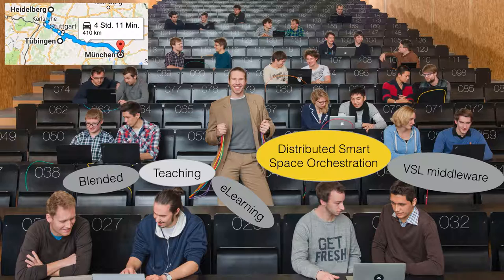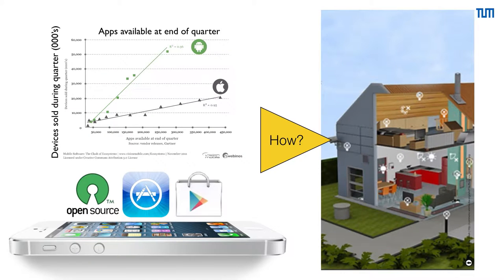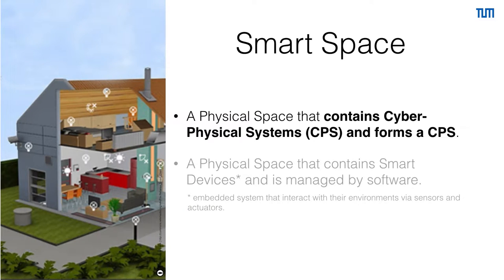My research interest relevant to this workshop I call distributed smart space orchestration. All of us have smartphones, and on them you can install new software that changes the device's behavior. My research is about how you can do that for real physical spaces — like this room. A smart space is a physical space that contains cyber-physical systems interacting between software and physicality, managing all the different devices and their common functionality.